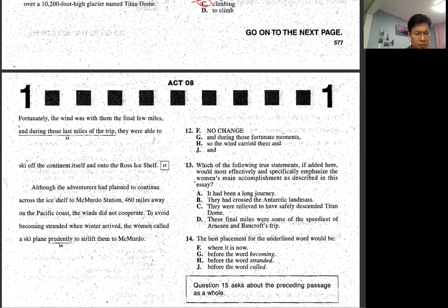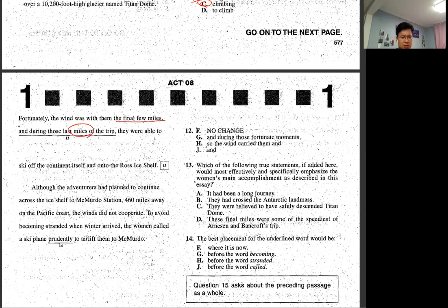And then fortunately, the wind was with them the final few miles. And during those last miles of trip, they're able to, so this is the final few miles gives us the last miles, right? So then this is redundant. So we'll just take this out. J is okay.